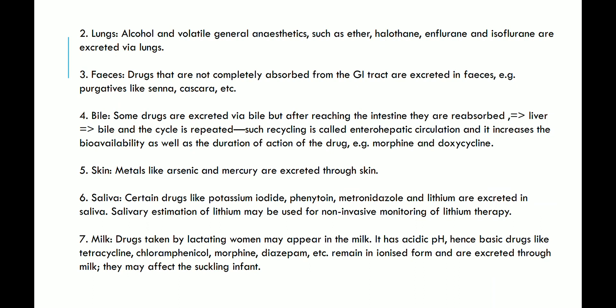The second pathway of drug excretion is through the lungs. Alcohol and volatile general anesthetics such as ether, halothane, and isoflurane are excreted via the lungs. Drugs not completely absorbed from the GI tract are excreted in feces — for example, purgatives like senna and cascara. Some drugs are excreted via bile, but after reaching the intestine they are reabsorbed — this is enterohepatic circulation. Such recycling increases bioavailability as well as the duration of action of the drug.